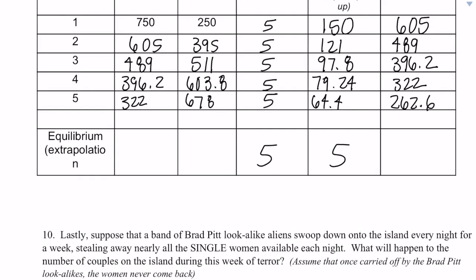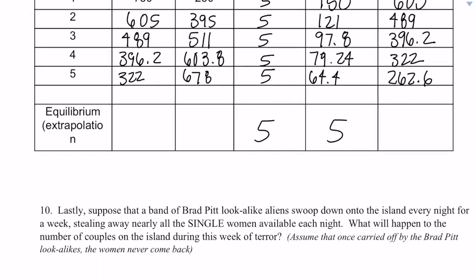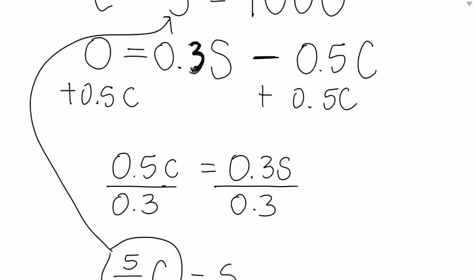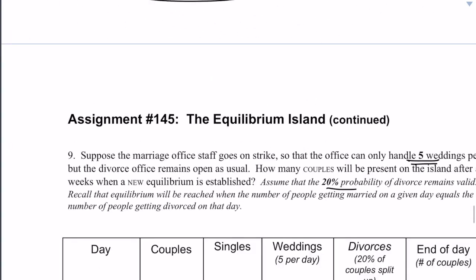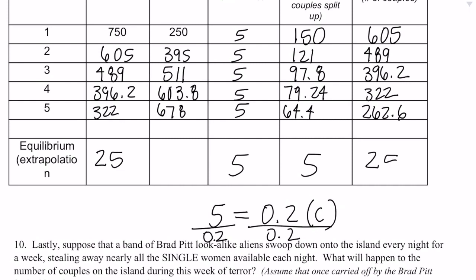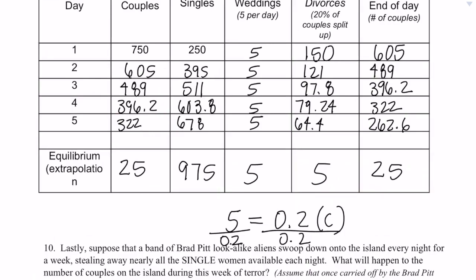We can solve this algebraically. Like before, I set the amount of weddings equal to the amount of divorces. We know the amount of weddings is five, and we set that equal to our divorces, which is 0.2 times c. Dividing both sides by 0.2, we get 25 couples. That's a much easier way to do it algebraically, and that is how you would do number nine.